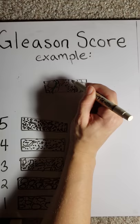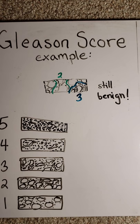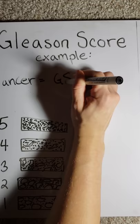Theoretically, one could have a grade 2 with some grade 3. Grade 2 is considered benign, while grade 3 can be considered cancerous in high volumes. Regardless, guidelines dictate a minimum of Gleason score 6 to be diagnosed with prostate cancer. Anything less is reported as benign.